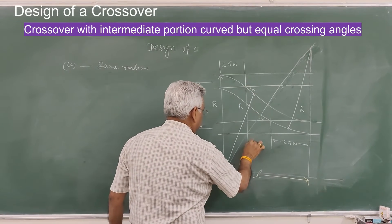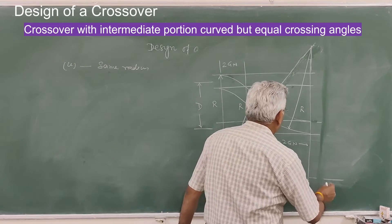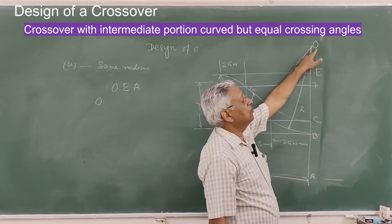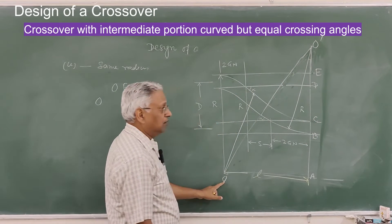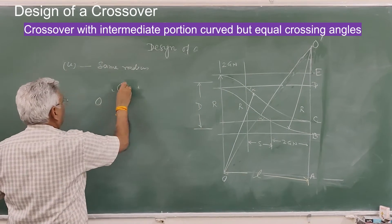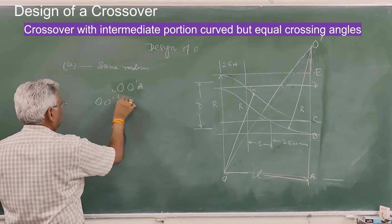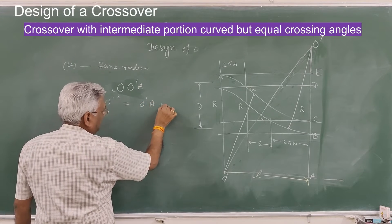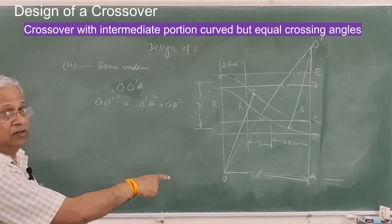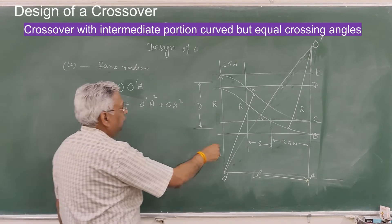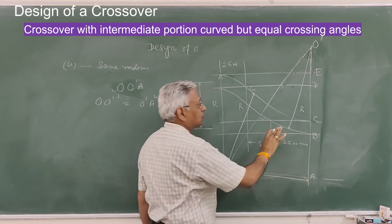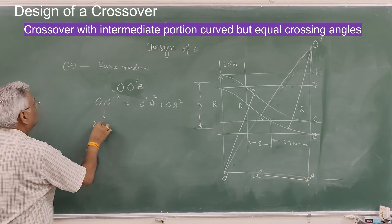The task again is to find distance S. Label the points A, B, C, D, E, O, and O' (the centers of the two curves). In triangle OO'A, by the Pythagorean theorem: OO' squared equals O'A squared plus OA squared. OA is L, the overall length to be determined. If each curve has radius R, then OO' equals 2R minus G.